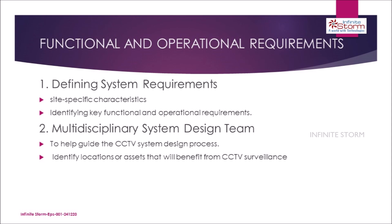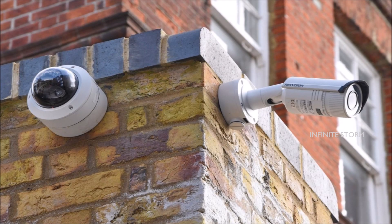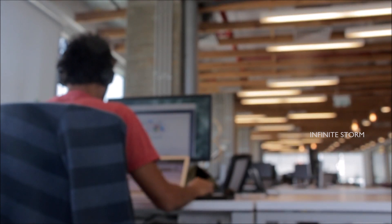1. Defining system requirements. 2. Multidisciplinary system design team. In order for an organization to properly implement a CCTV system, site-specific characteristics need to be assessed by a knowledgeable multidisciplinary team of personnel. This team is critical to identifying key functional and operational requirements.